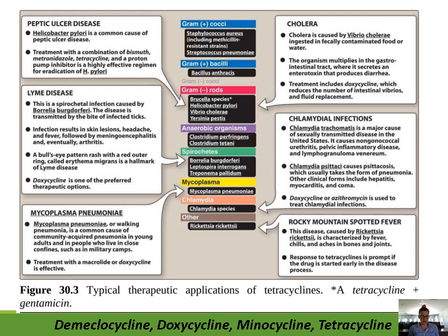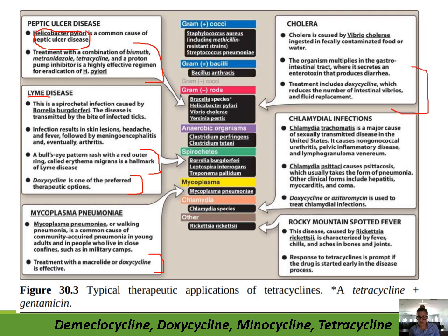To summarize coverage: we talked about tetracycline against H. pylori used in combination therapy, Lyme disease with doxycycline as the preferred agent, mycoplasma pneumonia — or walking pneumonia, a community-acquired pneumonia seen in young people living in cramped conditions like military camps or college dorms — treated with a macrolide or doxycycline. We also covered cholera, chlamydia (using doxycycline or erythromycin), and Rocky Mountain spotted fever.